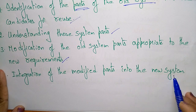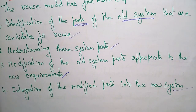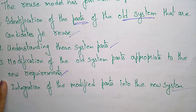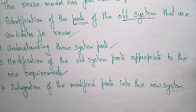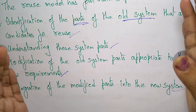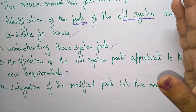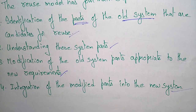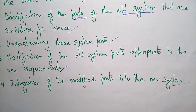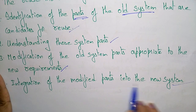Integration of the modified parts into the new system. If you want to reuse a model already created in the old system, first identify the parts which can be reused. Some software components have certifications or patents — you are not supposed to copy those. So identify only the parts which are free to reuse, add modifications to fit your new requirements, and finally integrate the modified parts into the new system.